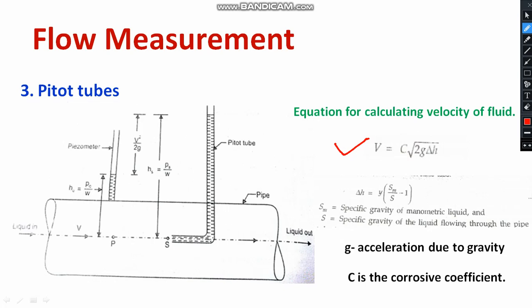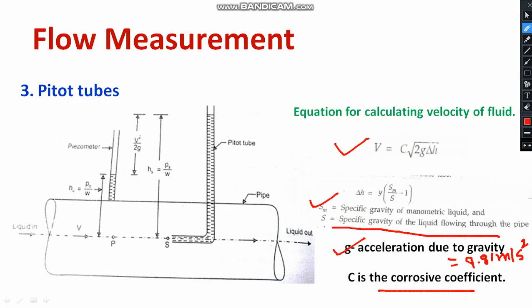The velocity of fluid flow is calculated using the formula: V = C × √(2g × ΔH), where g is the acceleration due to gravity (9.81 m/s²) and C is the coefficient of velocity. ΔH is equal to Y × (S_M / S − 1), where S_M is the specific gravity of the manometric liquid and S is the specific gravity of the liquid flowing through the pipe.